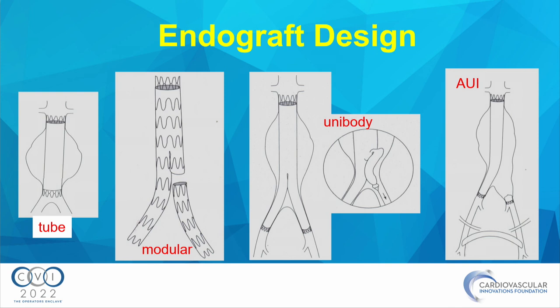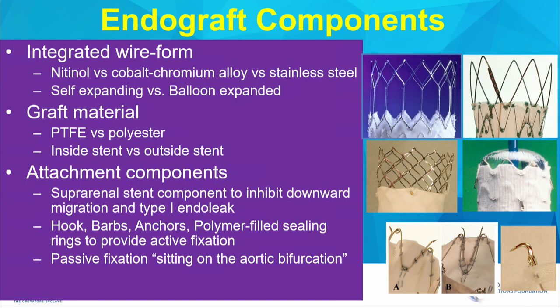There are really two types of endografts: modular ones, where multiple pieces are assembled together inside the aortoiliac segment, and unibody ones. Endografts have a number of components. First, there is the stent or integrated wire form made of nitinol, cobalt chromium, or stainless steel. It may be self-expanding or, rarely, balloon-expandable. The graft material is either expanded polytetrafluoroethylene or polyester, and the graft can be on the inside or outside of the stent — which is relevant for treatment of aortoiliac disease.